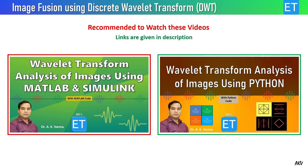Before going ahead, I request you to watch my two previous videos. The first is about wavelet transform analysis of images using MATLAB and Simulink, and the second covers the same topic but implemented in Python. Links are in the description. These two videos will help you understand the current one, as they cover how an image can be decomposed into wavelet coefficients — such as approximation coefficients and detailed coefficients — using MATLAB or Python.